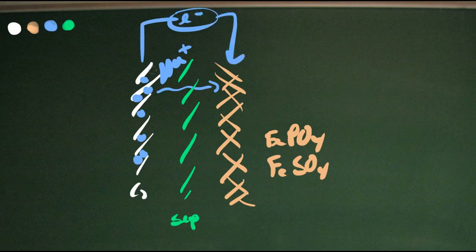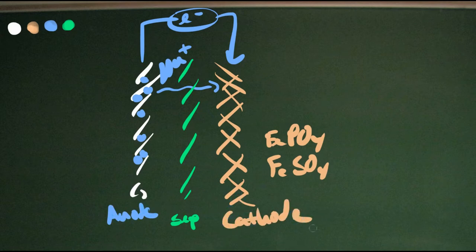Those electrons come across and meet up with the sodium ion on the far side. Where electrons are coming out is your anode and where they are going in is your cathode. That's just the nomenclature.